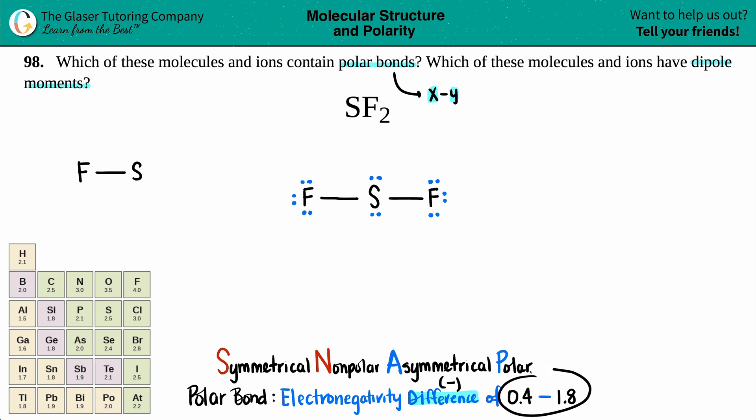And if it fits in between 0.4 and 1.8, your bond is polar, which means that the electrons in the bond are not evenly split. They would be always getting pulled towards the more electronegative element. So let's just see. Fluorine, most electronegative element on the periodic table with a 4.0 ranking. There we go. And then sulfur is coming in with a 2.5.